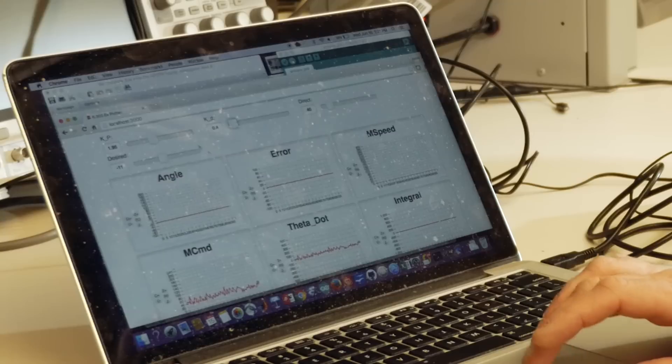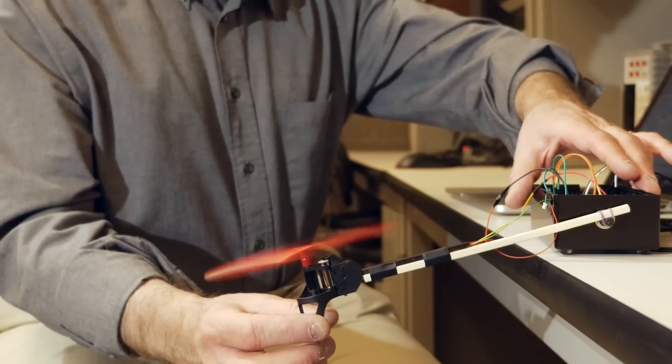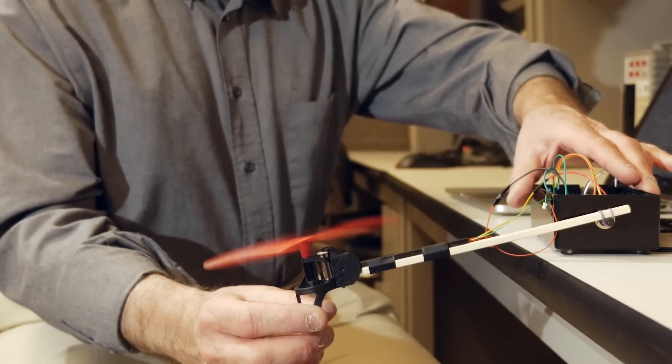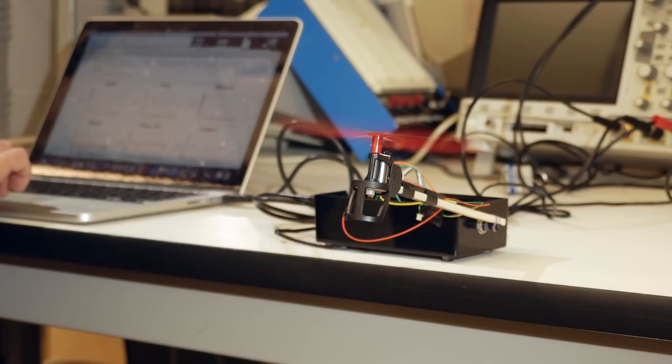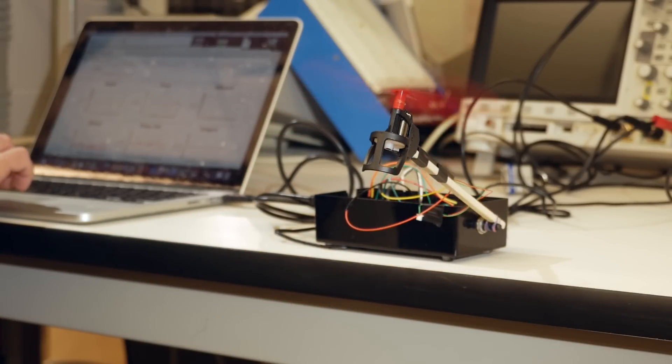You'll have control over the direct command, which causes the propeller to spin. And what we're doing with this arm is trying to control the propeller speed so that it keeps the arm level. And we're measuring the angle and using the angle to control the speed of the propeller.